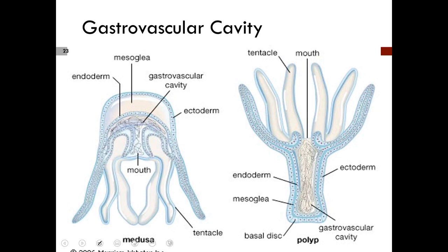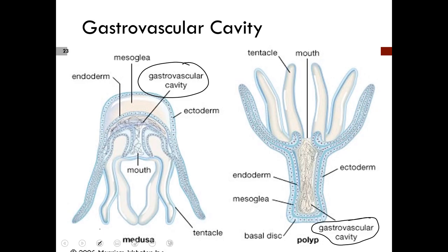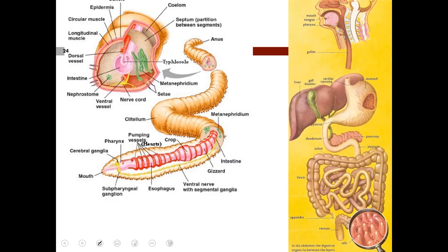This shows an animal with a gastrovascular cavity. On the left is the medusa form, with the mouth facing down — what goes in must exit. On the right is the polyp form, with the mouth facing up — again with that gastrovascular cavity. The next examples show the alimentary canal, or complete digestive tract, with both a mouth and an anus.